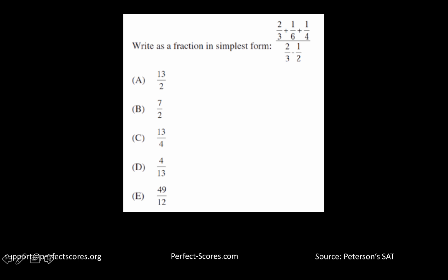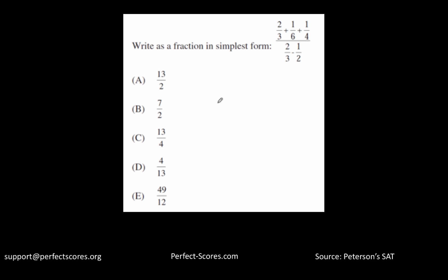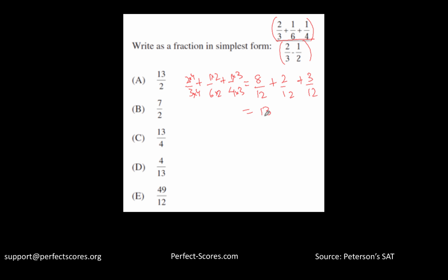Let's solve some questions. This question says: write the fraction in its simplest form. You can clearly see this is the big main division line. First, let's calculate two over three plus one over six plus one over four. Making everything over 12, that becomes 8 over 12 plus 2 over 12 plus 3 over 12, which equals 13 over 12.